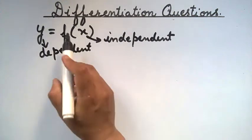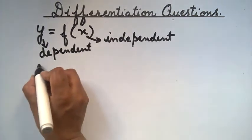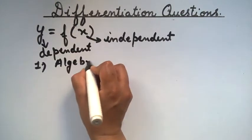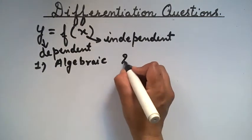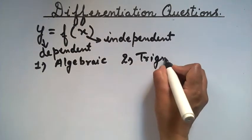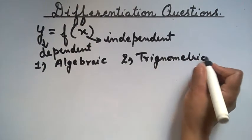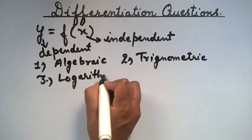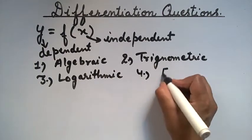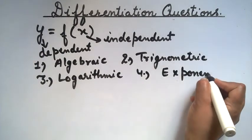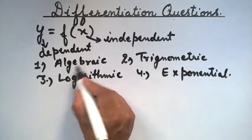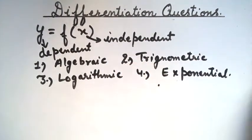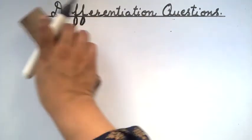Generally we use four types of functions of x: algebraic function, trigonometry function, logarithmic function, and exponential function. Let's solve some numericals of these four types of functions which we use in our physics syllabus. Let's start with the algebraic one.